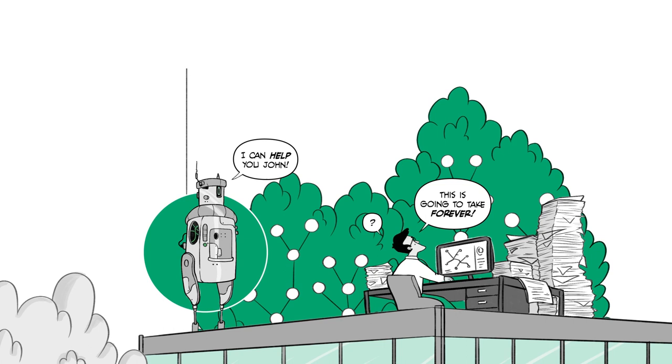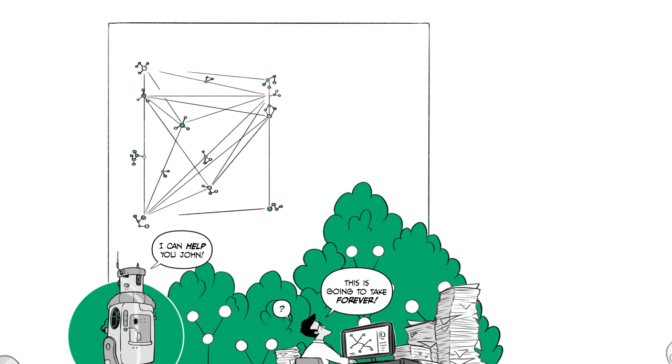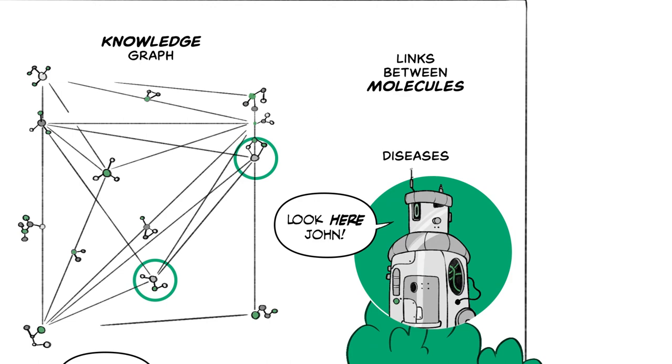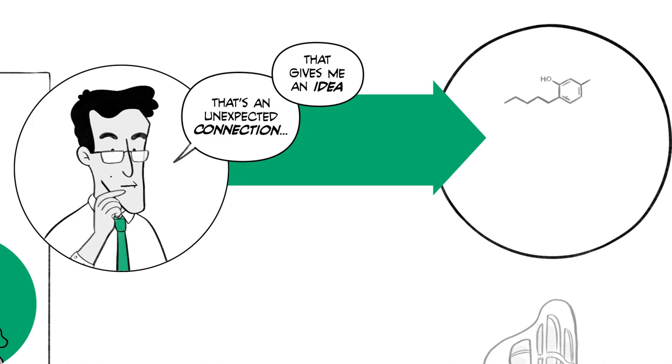The AI automatically analyzes and neatly summarizes the information relevant for his research question in a so-called knowledge graph. It shows the links between relevant molecules, diseases and organisms. By helping John pinpoint where he should focus his attention, the AI saves him months, helping him develop new therapies faster.